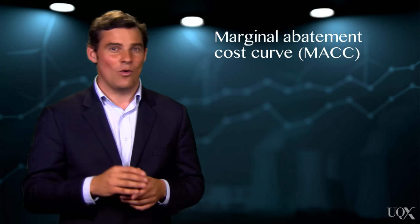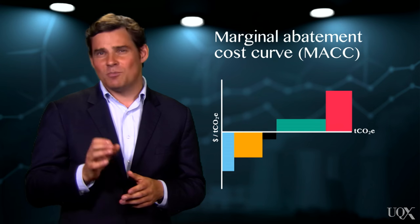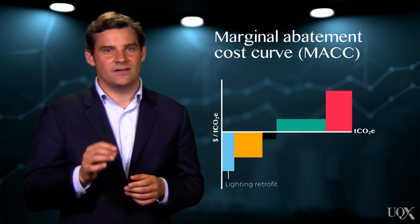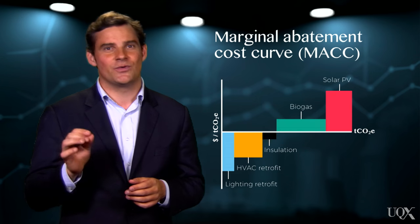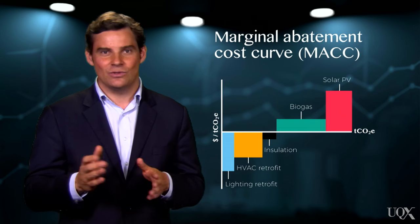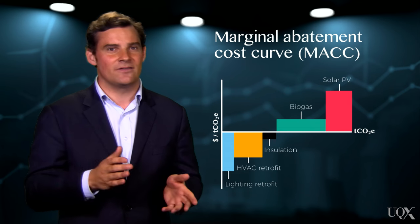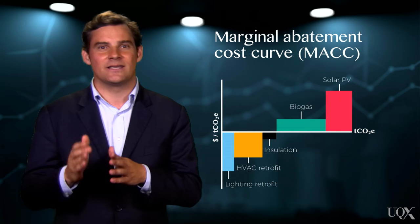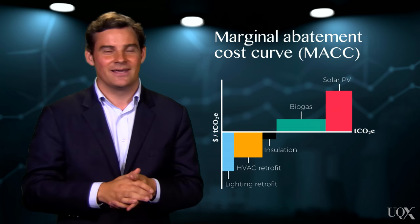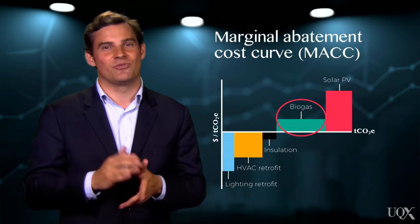To visualise this, we can go one step further and develop a marginal abatement cost curve, or MAC, which looks like this. Each box on the MAC curve represents a different project option to reduce greenhouse gas emissions. Essentially, a MAC is a visual economic decision-making tool that assists managers to identify, rank, and prioritise emissions abatement projects. Let's focus our attention on this biogas to energy project.